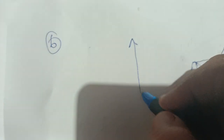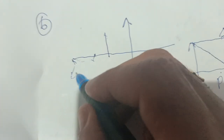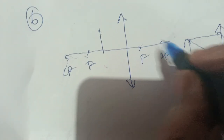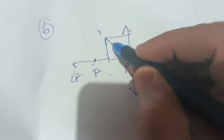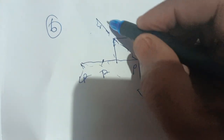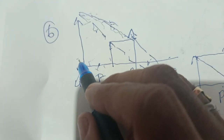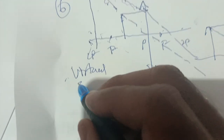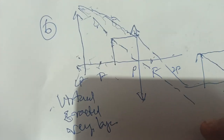For the sixth diagram, the image will be formed on the same side. Keep the object between P and f. Draw a parallel line — extend it like this, and extend the other line like this. They will meet at a point on the same side, so the image is virtual, erect, and very large. In such a manner you can very easily draw the diagrams. If you have any doubt, please contact my phone number 8008264846.